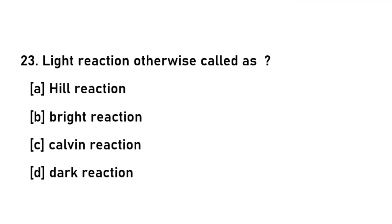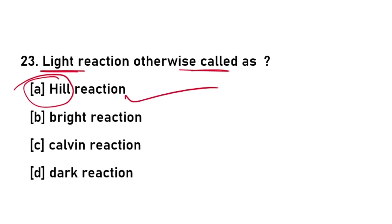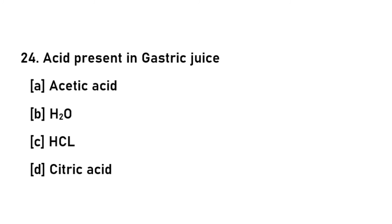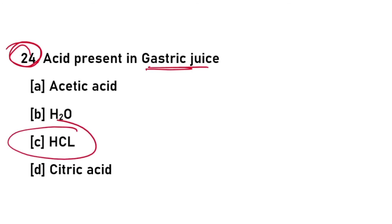Twenty-third question: the light reaction is otherwise called the Hill reaction. Twenty-fourth question: the acid present in gastric juice is HCl — hydrochloric acid.